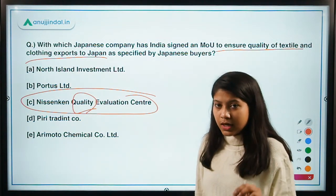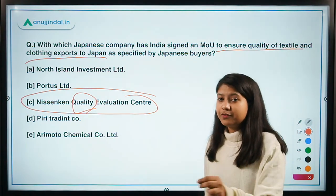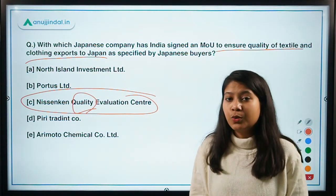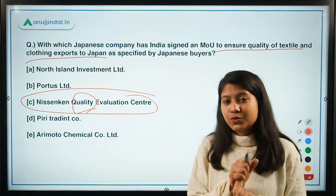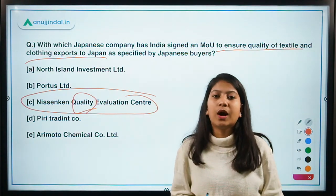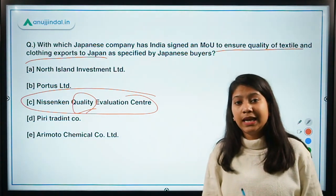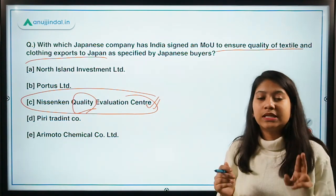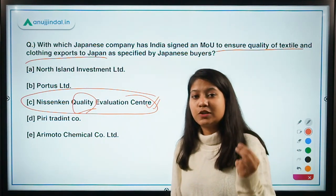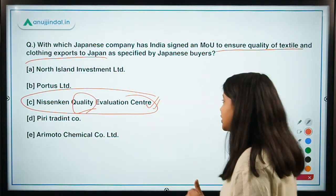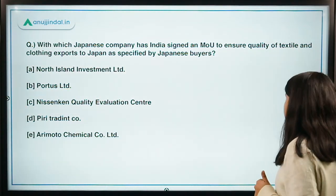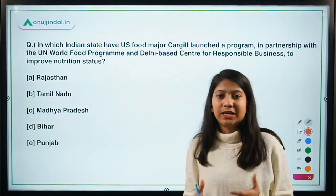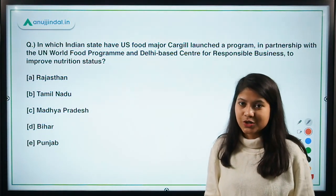The important fact to remember is that the MOU is for textile and clothing quality. Now I have two questions for you: first, who is the Minister of Textiles? Second, who is the head of the Nisikin Quality Evaluation Center? Please answer in the comment section below. Since it's exam time, do share this session with your friends so they can also prepare.